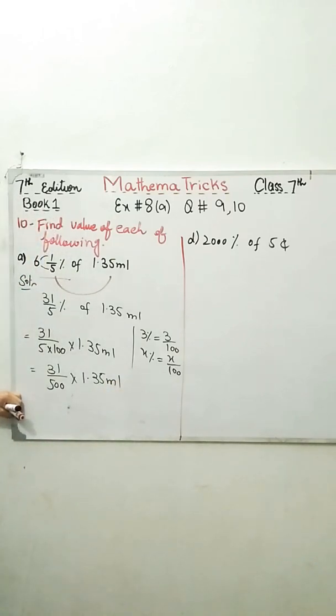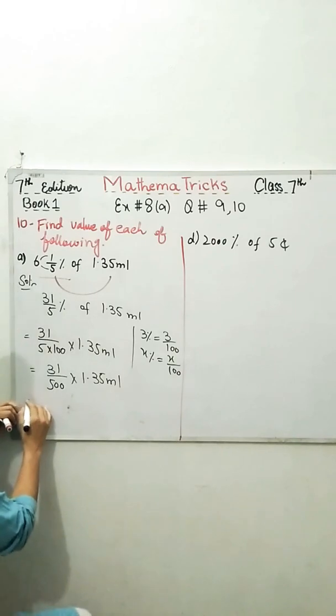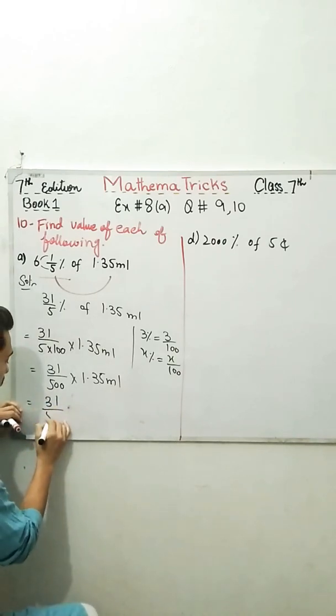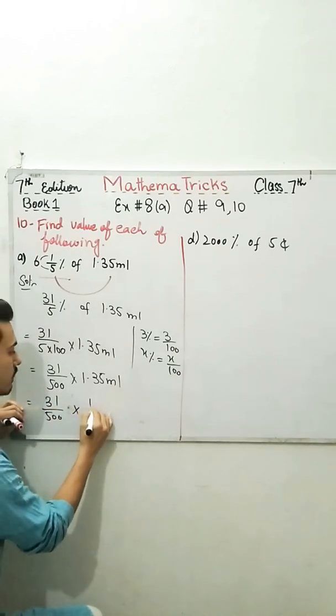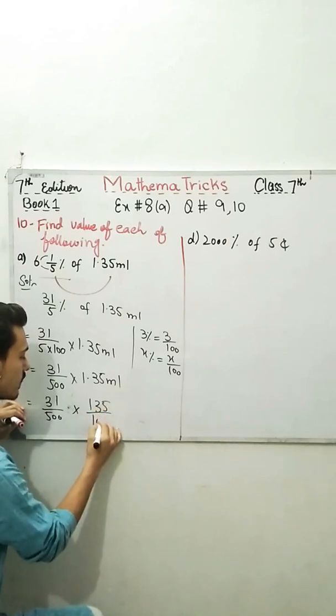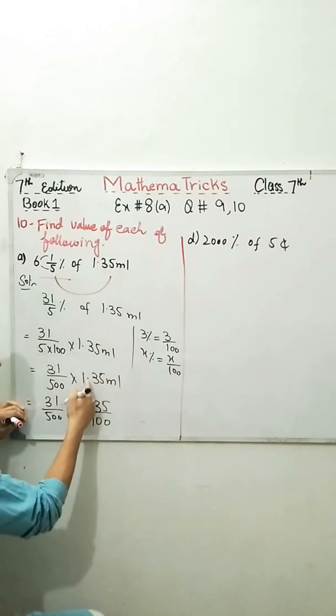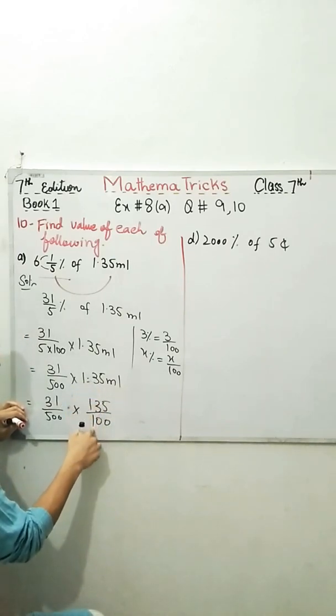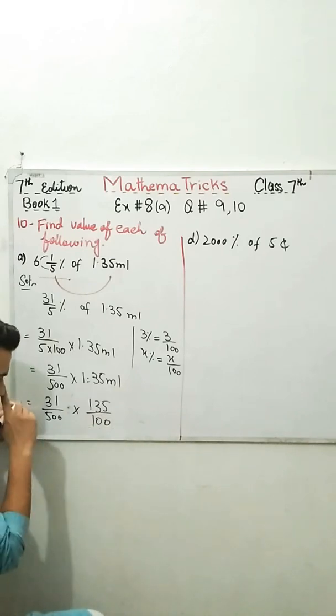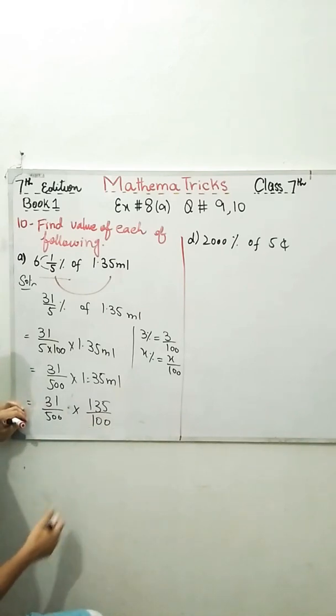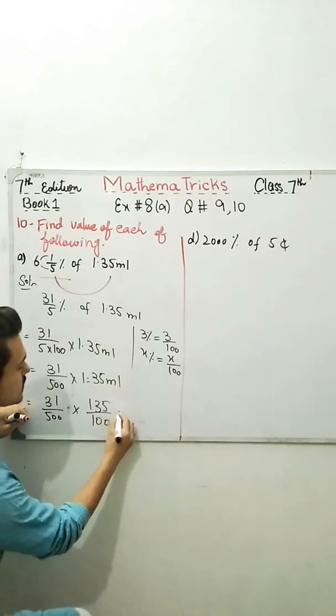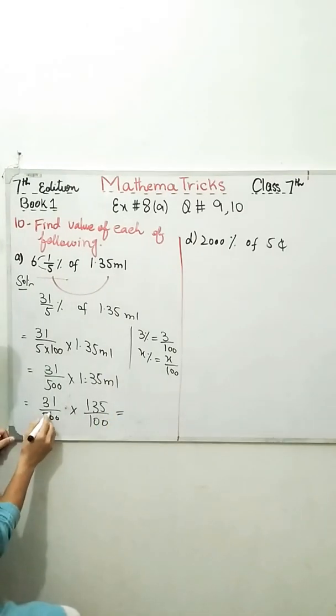What do we need to do? You can cut out different values. You can make use of DMAS rule. We first need to divide, then multiply. So we can say that 31 over 500 into 1.35 ml. Or you can make it more simple if you want.